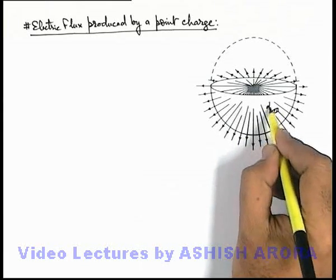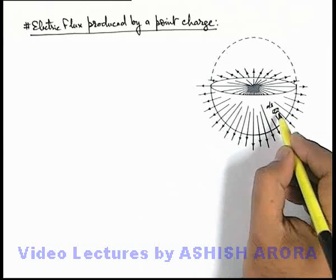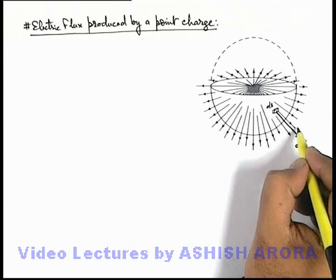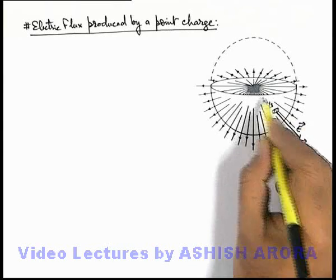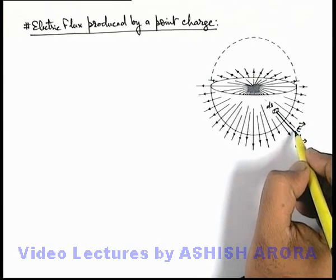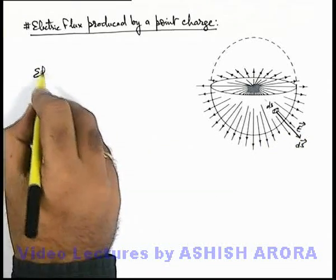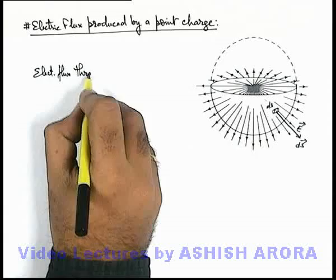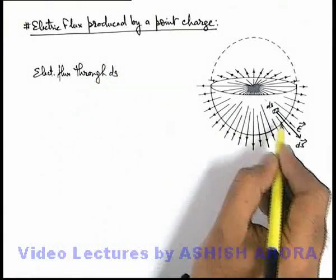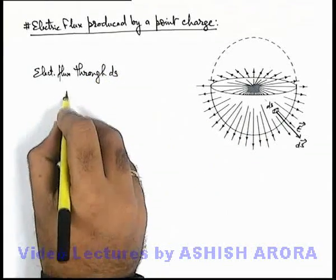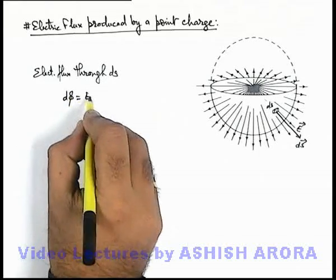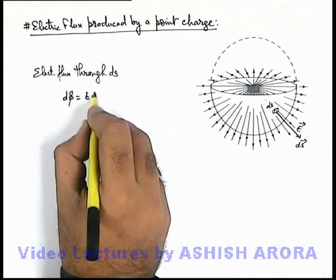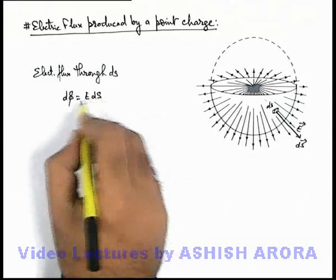In this situation, if we calculate the flux and consider a small elemental area dS on this section, the area vector dS will be in radially outward direction, and electric field will also be in radially outward direction. The electric flux through dS on the semi-spherical section can be written as dφ = E·dS cos θ. Since E and dS are parallel, we can simply write it as E·dS.